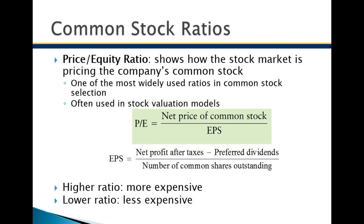Now we're going to switch into common stock ratios, moving into more stock market-oriented analysis. The price-to-earnings ratio is probably the most important ratio in analyzing a company. It's sort of like a 'like' factor on Facebook — you see a video with a million likes and know it struck a chord. The price-to-earnings ratio is like how many times people click 'like' on a stock. Every time you buy a stock, it's like clicking 'like' — recommending it to a friend. Price to earnings is really a popularity contest.